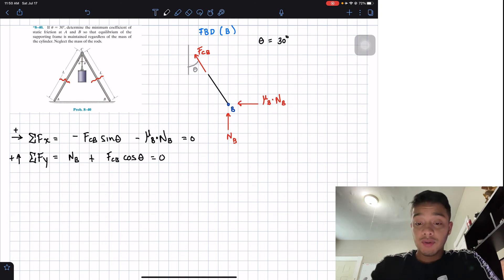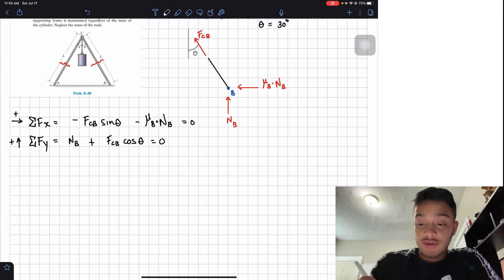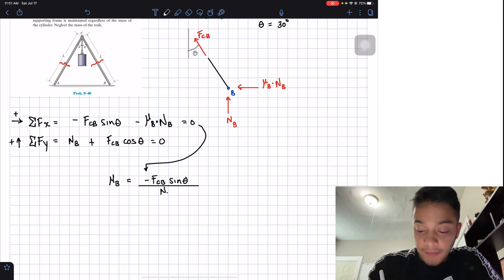So what we can do is that we're going to solve for mu's of B in this one, and then we're going to solve for NB on this one. So let's start by doing that. So we're going to take this equation and we're going to solve for mu's of B is going to be equal to negative FCV multiplied by the sine of theta divided by my normal B.